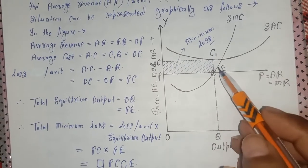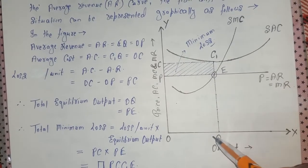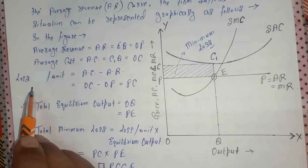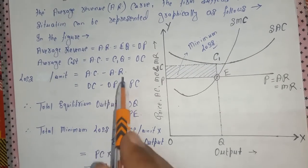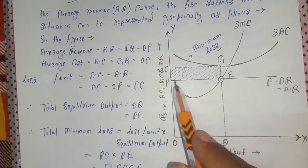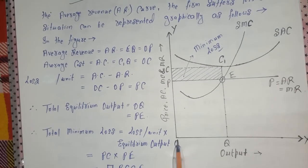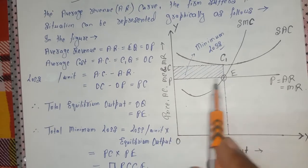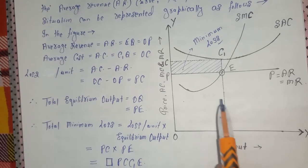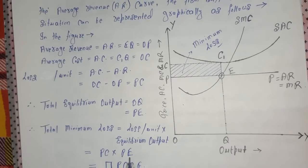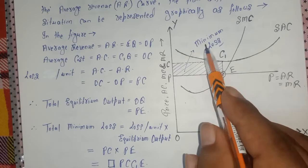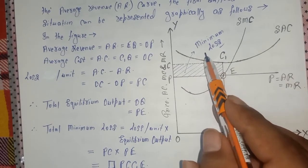Total equilibrium output OQ equals PE. Loss per unit equals OC minus OP equals PC. Total minimum loss equals loss per unit multiplied by equilibrium output: PC into PE, giving the rectangular area PCC1E. This shaded rectangular area represents the minimum loss of the firm in the perfect market under the second short-run situation.